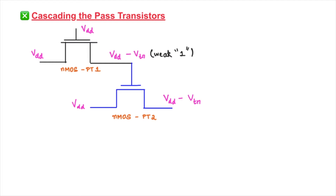Here we consider the example of two N-MOS pass transistors being cascaded. The gate voltage of the first N-MOS pass transistor is VDD — since VDD is a high input voltage, the first pass transistor is on. The input source voltage is VDD. Since it is an N-MOS pass transistor, it is not capable of passing a strong one; instead there will be a threshold voltage drop, giving an output of VDD minus Vtn1.